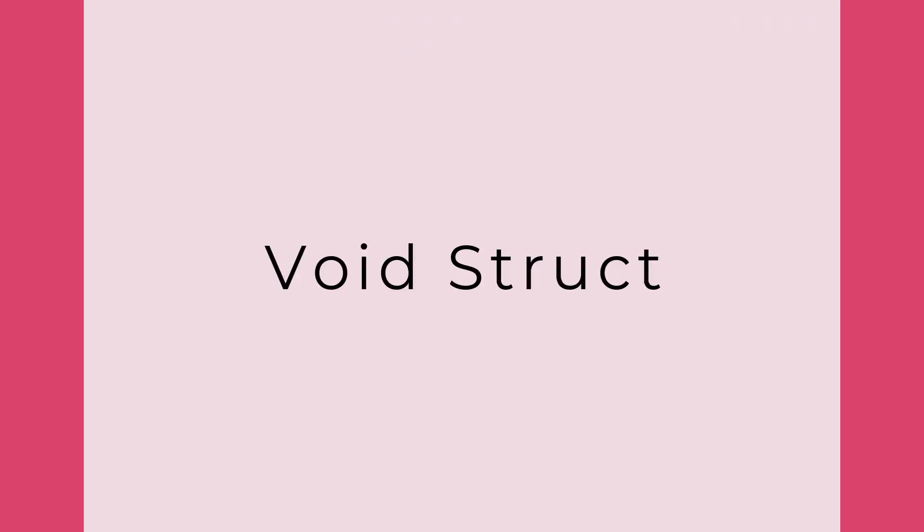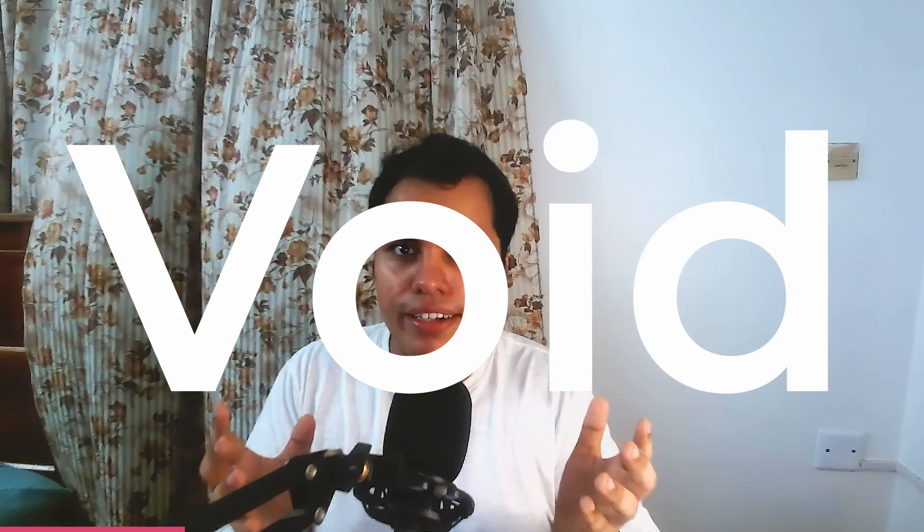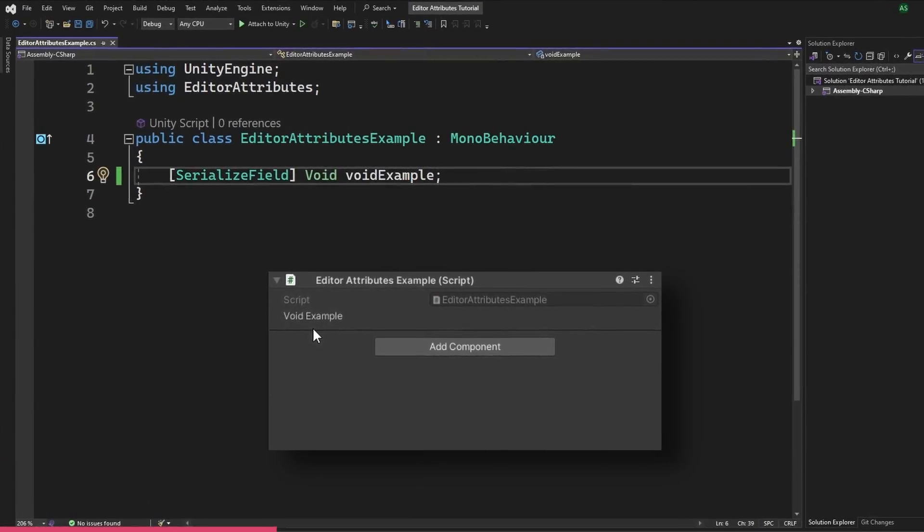What makes Editor Attributes a powerful tool is the ability to work with conditions. Before we get into that, we need to talk about the coolest part: void struct. There is a struct inside the Editor Attributes namespace called void that we can use as an empty field — just blank. We can add our attributes to it and the field is not rendered in the inspector. This means we can use this struct as a holder property for a group of variables, making complex tables and conditions work very easily.